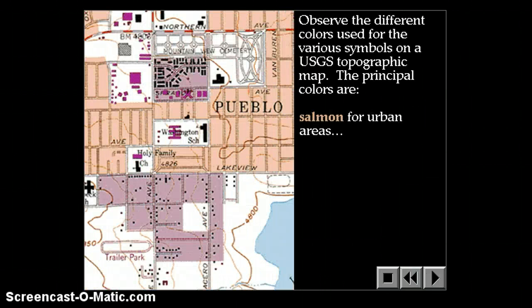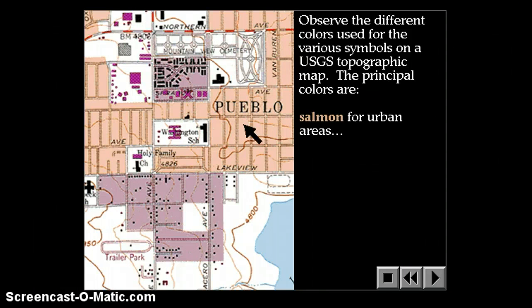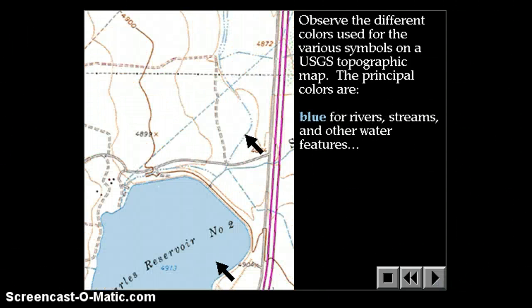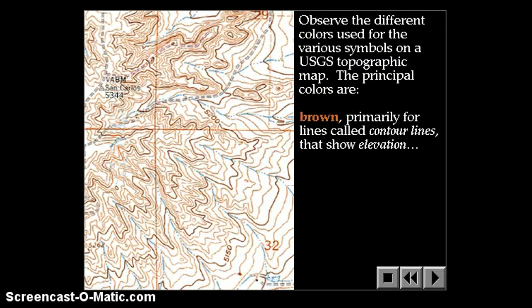Salmon color for urban areas or cities. Green for vegetation, whether it's forests or grasslands. Blue for rivers, streams, lakes. All water features are shown in blue.